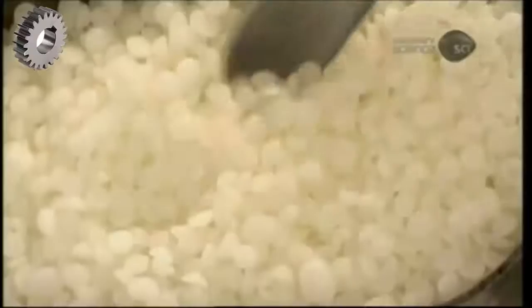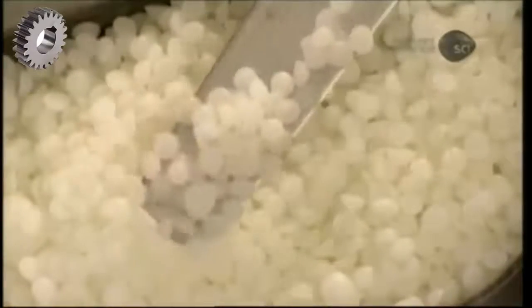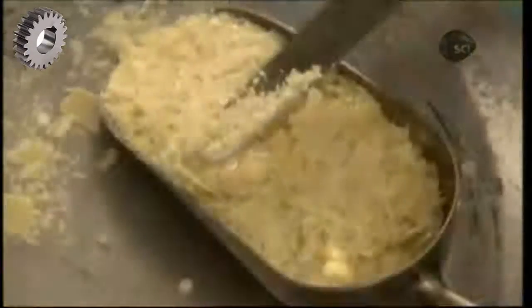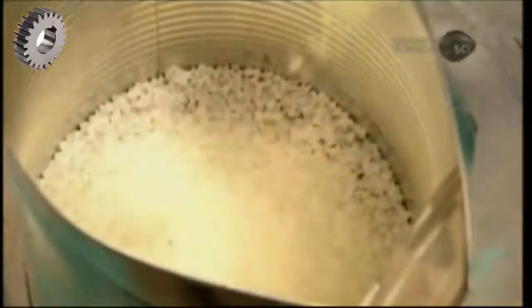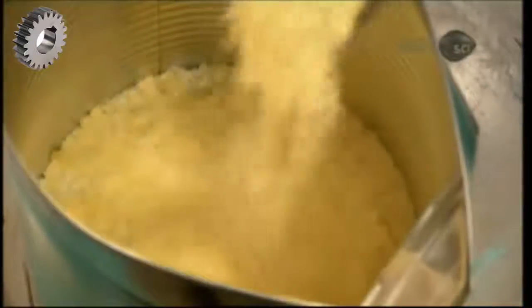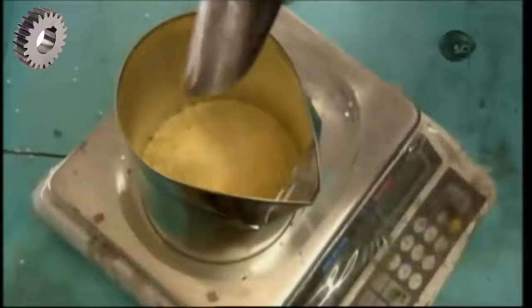The main ingredient in encaustic paint is white beeswax. To that, they add carnauba wax, which comes from the leaves of the carnauba palm tree. Carnauba wax is quite fragile, which is why they strengthen it with beeswax.